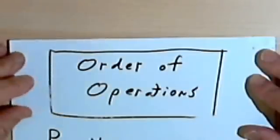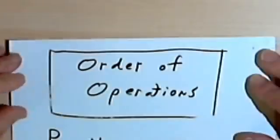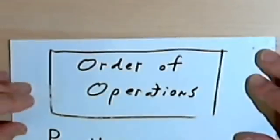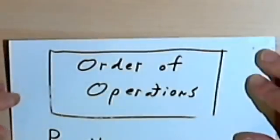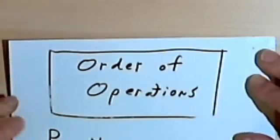This video is going to be about order of operations. What order of operations tells us is that if we have a bunch of mathematical operations like addition or division, it lets us know which ones to do in what order.